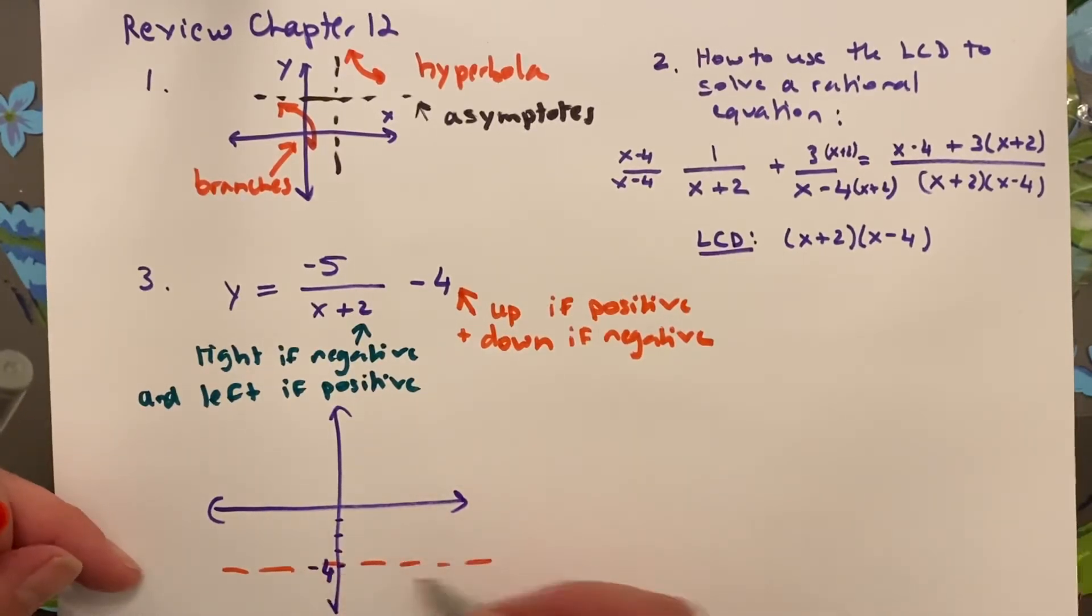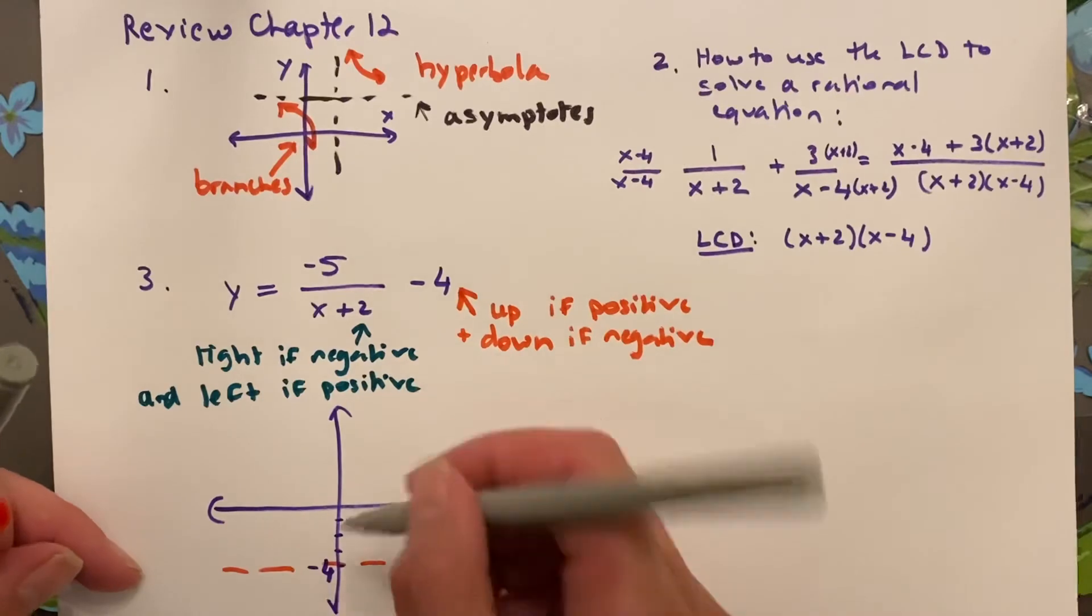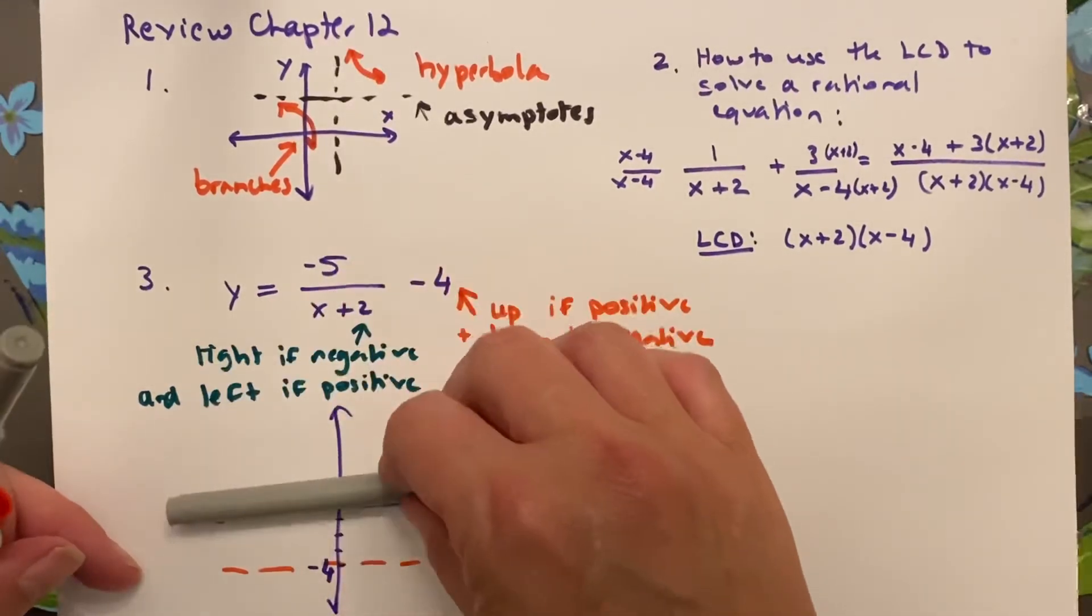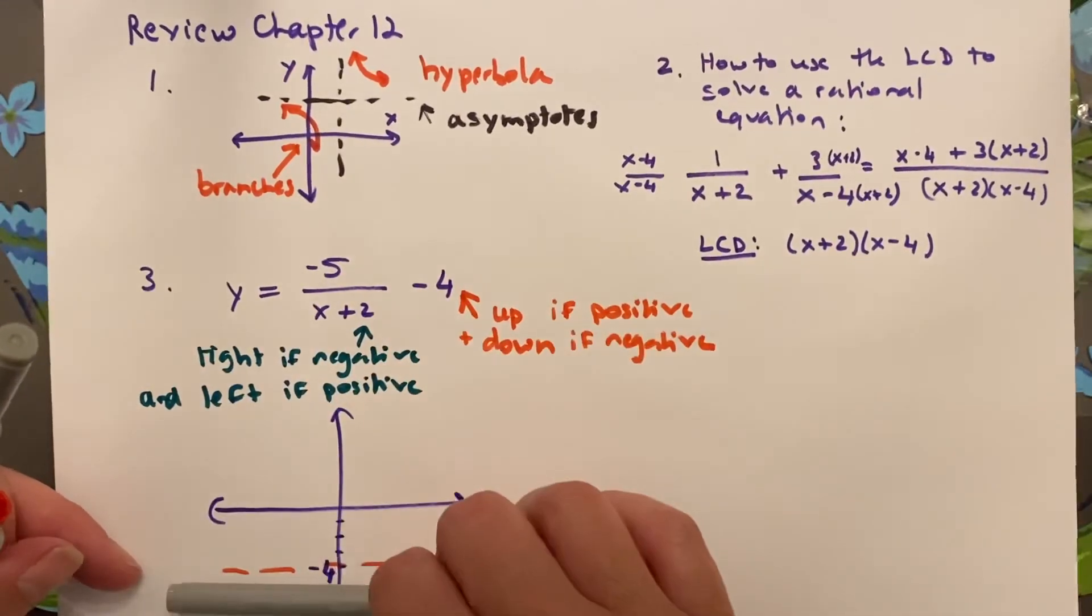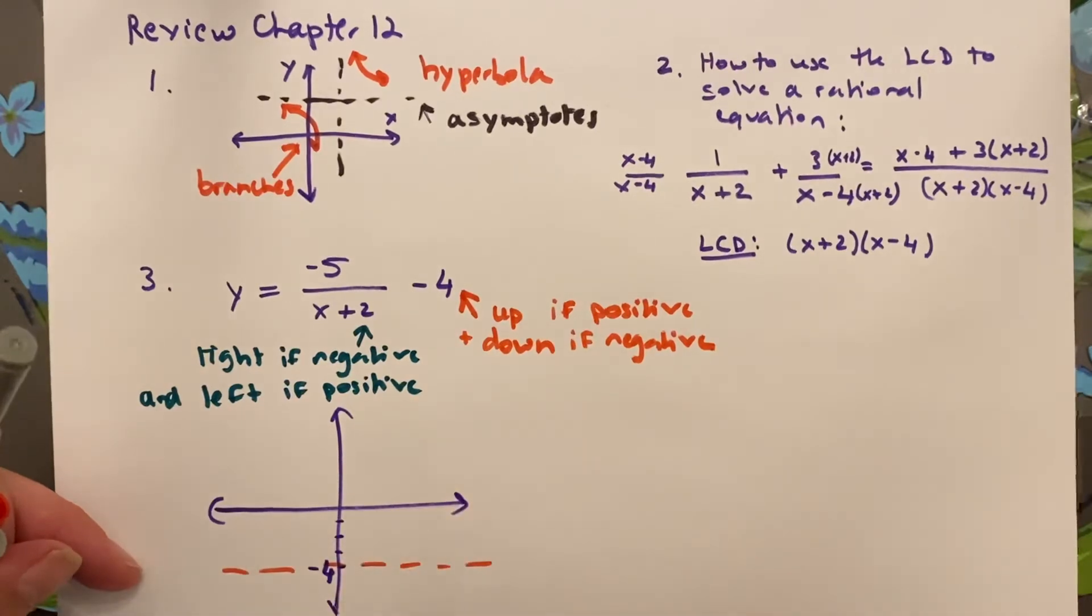And so this asymptote is down here. It's down because it moves, essentially, the x-axis down. But it's obviously a horizontal line, so it's the horizontal asymptote, even though it moves the graph down vertically.